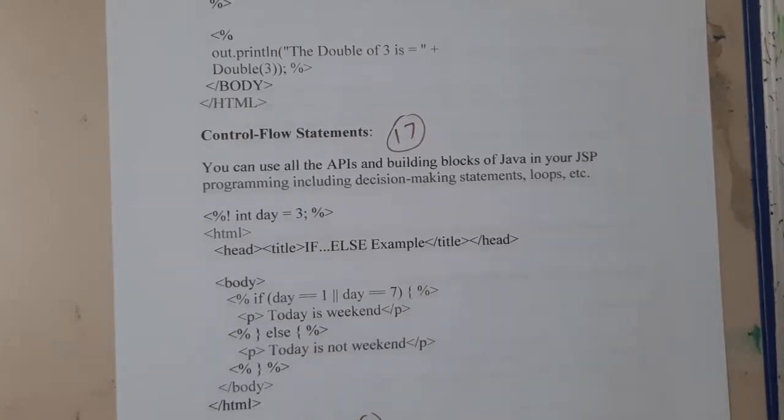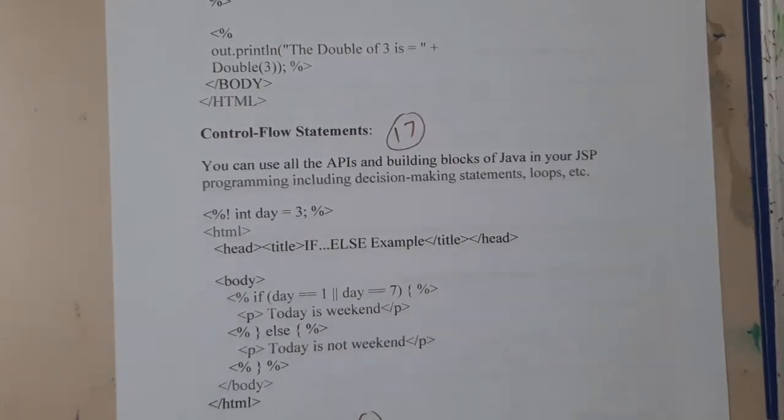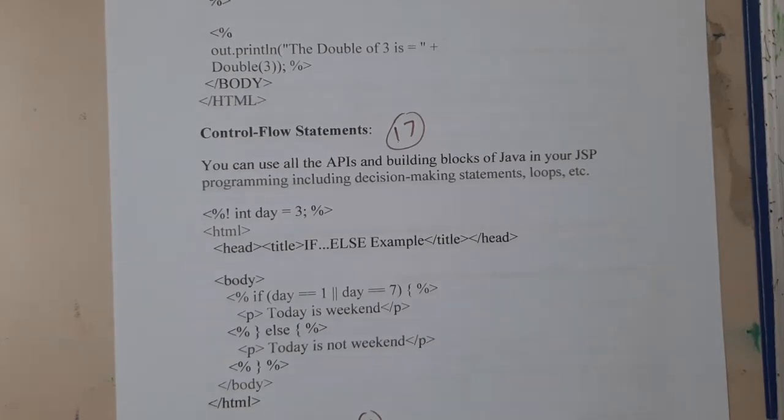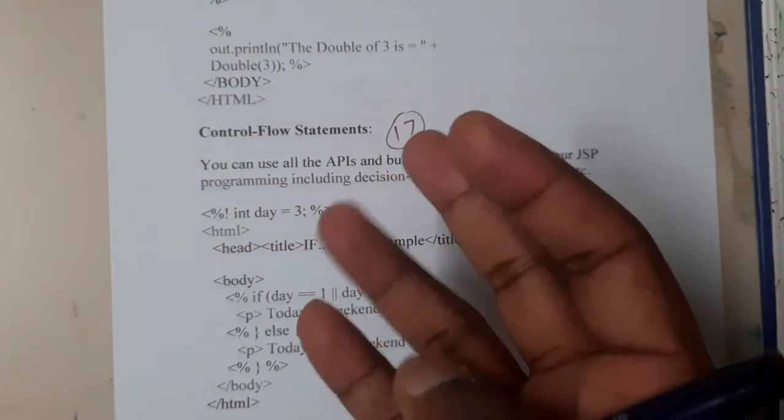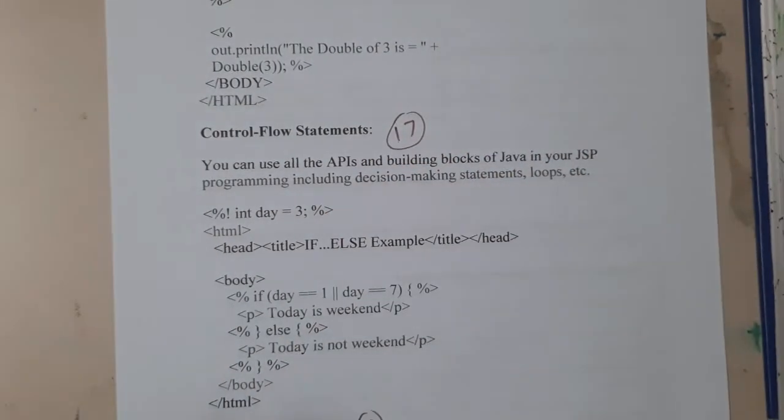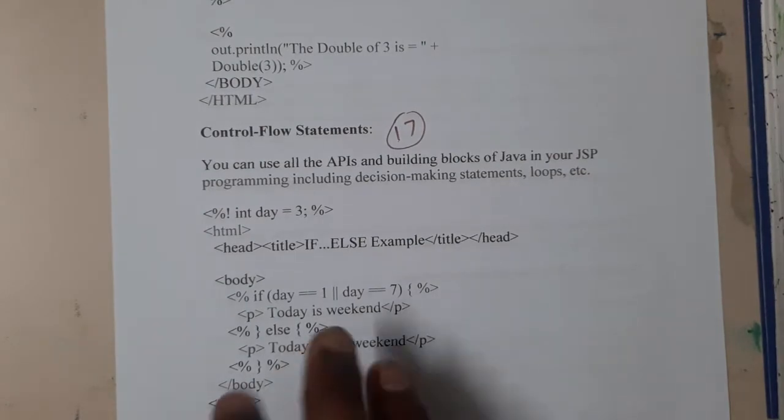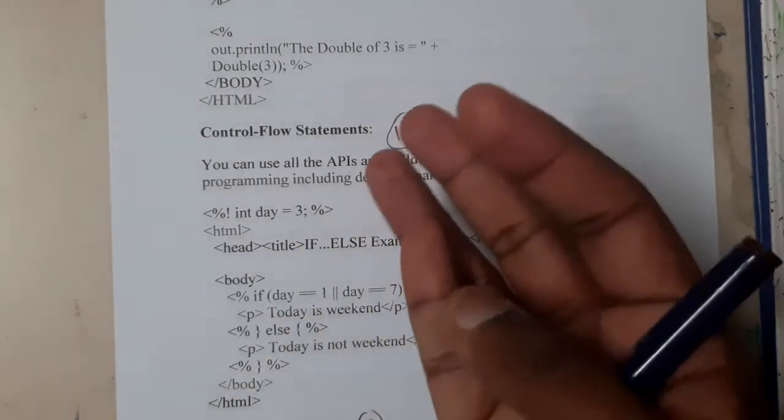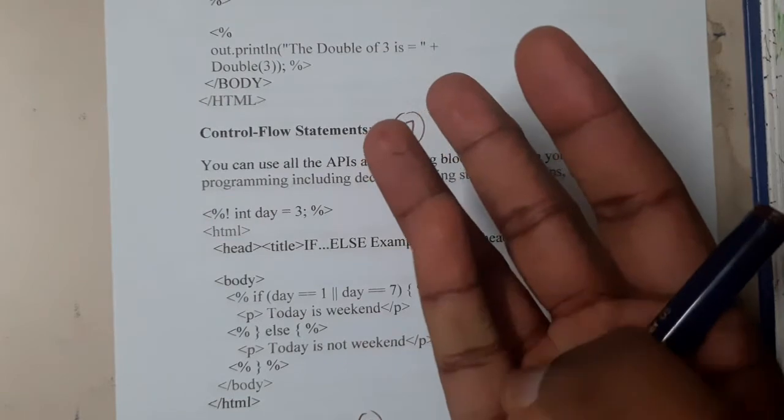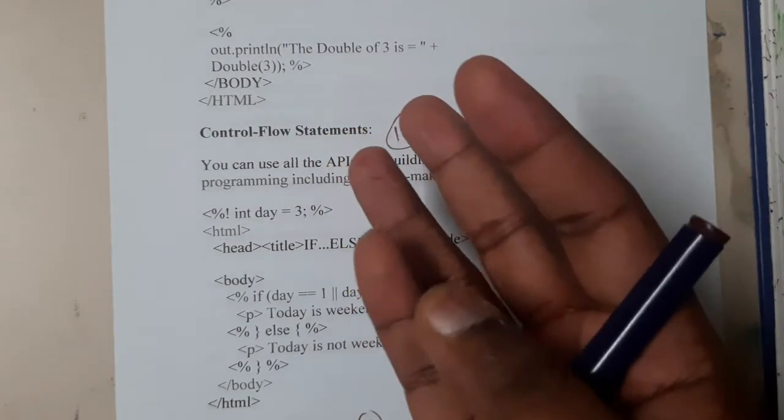Hello guys, we are back with our next lecture. In this lecture, let us go through control flow statements. Basically, control flow statements are nothing but decision making. Based on the decision, like if-else, switch, while, for loops, and all those things come under loops.